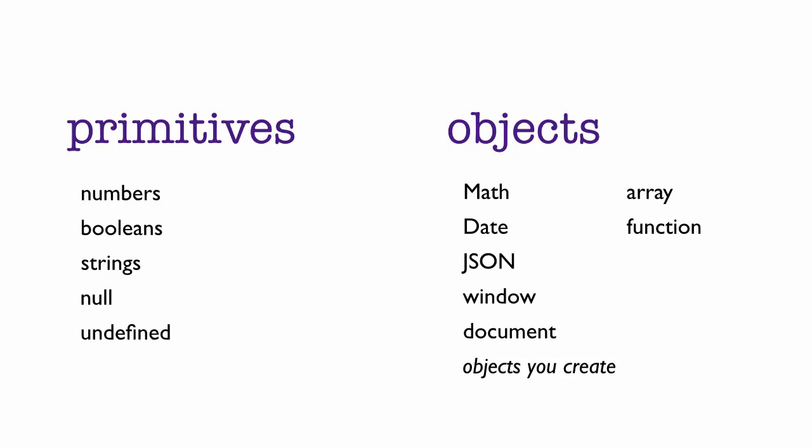And even stranger, sometimes primitive numbers, booleans, and strings are objects too. So let's dig a little deeper. First we'll take a closer look at arrays.